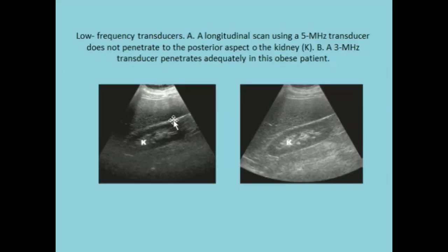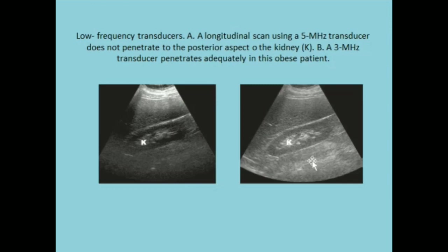In this image, a low frequency transducer of 5 MHz is used, and it does not penetrate to the posterior aspect of the kidney. While in this image, a 3 MHz transducer is used and therefore the posterior aspect of the kidney is well visualized. So, the low frequency may be selected for obese patients and the higher frequency may be selected for thin patients.